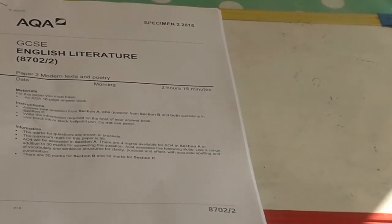English Literature Paper 2 is Modern Text and Poetry. This is a slightly longer paper, it's 2 hours and 15 minutes as there are three sections to the paper.